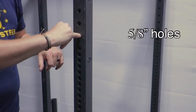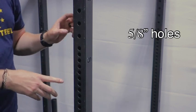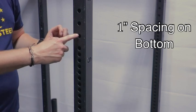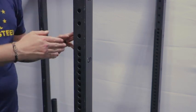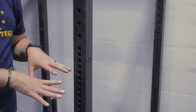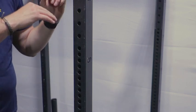We have 5/8 inch holes, and our spacings on our racks are either one inch or two inches depending on where you're at on the rack. The bottom has one inch spacings, the top has two inch spacings.